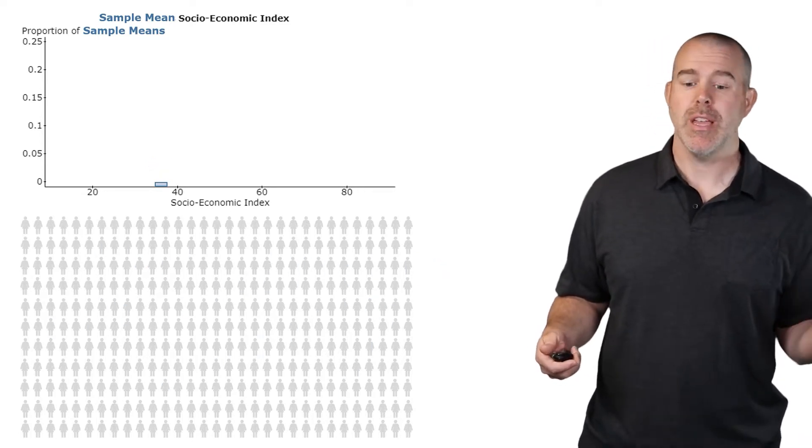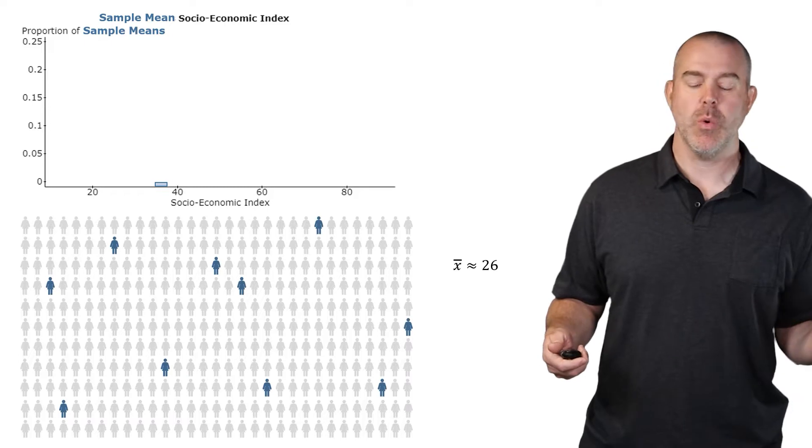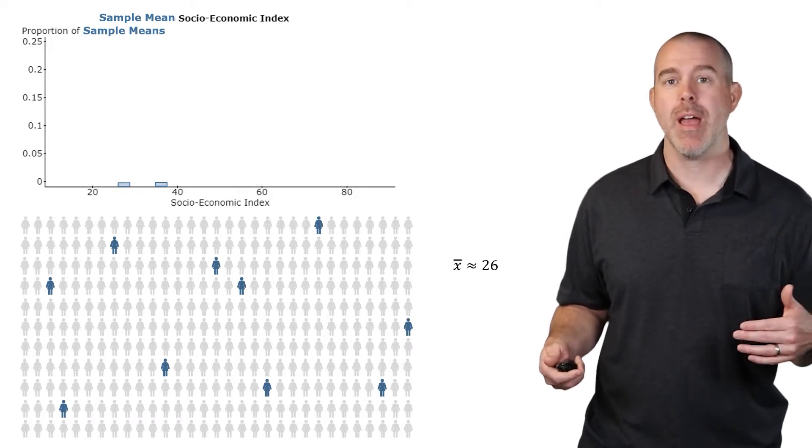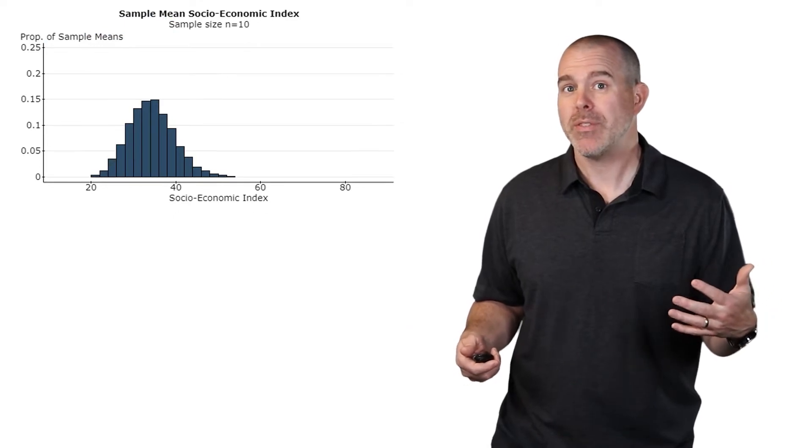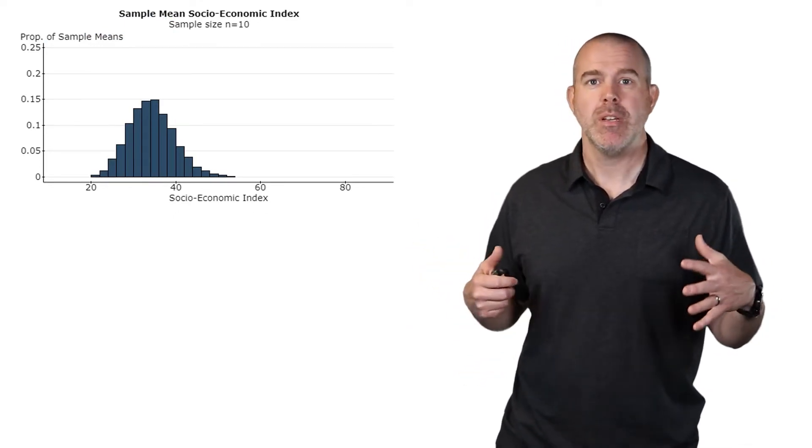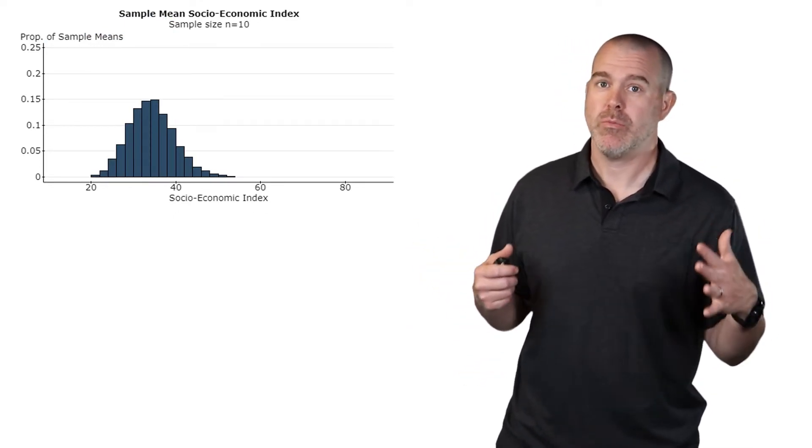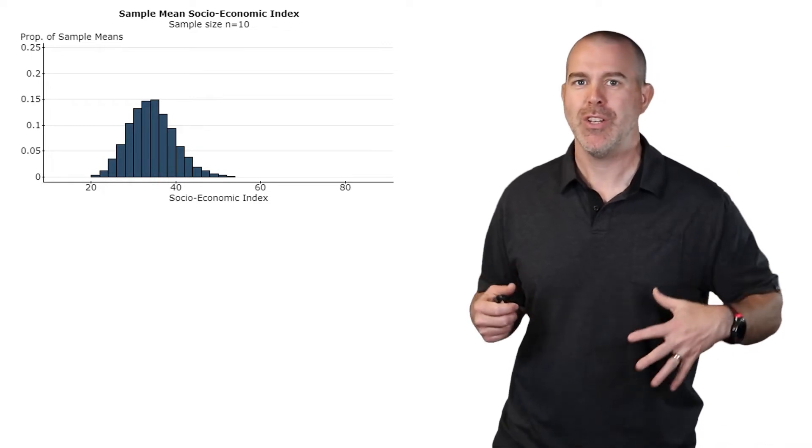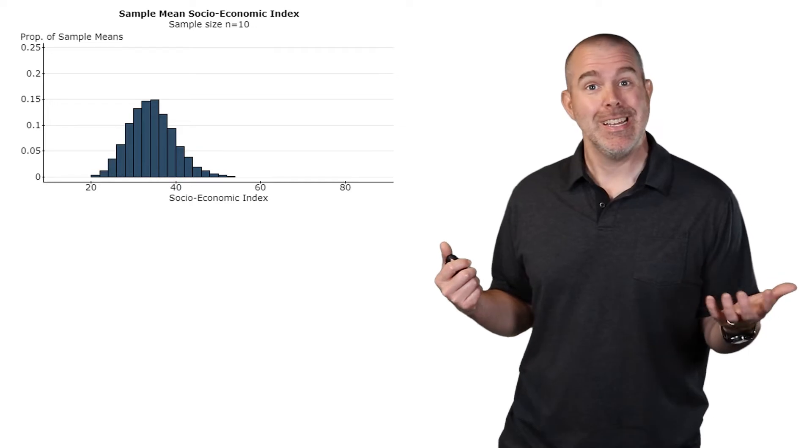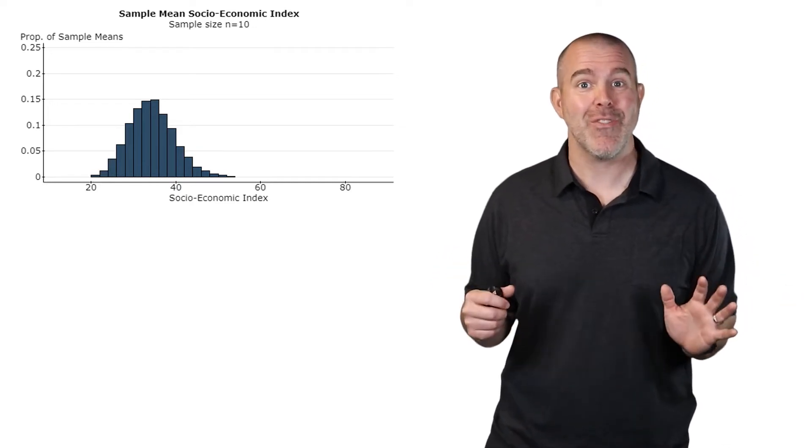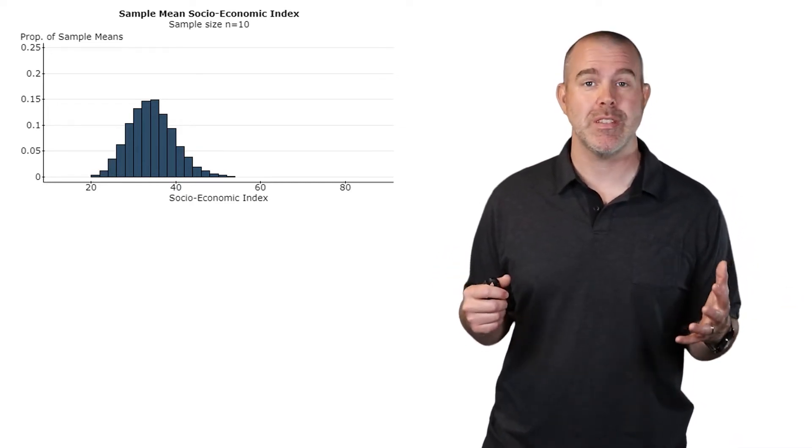Do another sample, say this sample, its mean is 26, put that up on the histogram, and then keep doing these. When we do all samples of size 10 - this isn't actually all samples of size 10 because there's way too many of them and that would take too long to compute, but this is a really good number of them - you can see, interesting, very different distribution for the sample means.